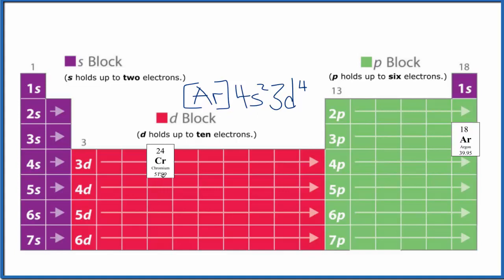So we have to do this a little bit differently. It turns out the d orbital holds up to 10, and it's very stable when this is either full with 10 or half full with 5. So we're going to move one of the electrons from this 4s2 to the 3d4.